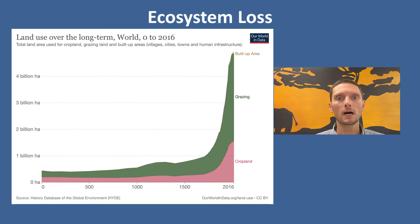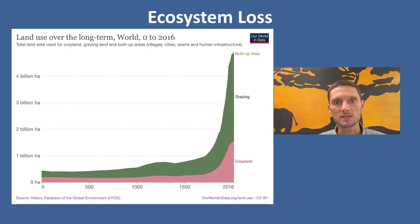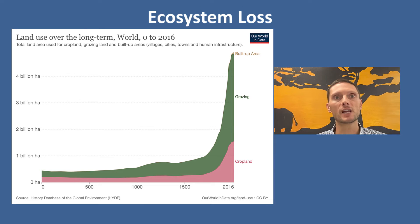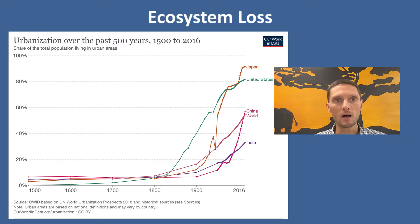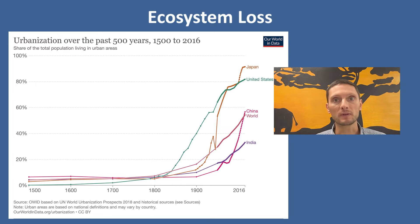Now we want to look specifically at how ecosystems are being lost, through direct or indirect causes. Starting with agricultural land expansion — since the 1970s, we've seen massive changes in the amount of land used for agricultural purposes, particularly affecting old-growth tropical forest ecosystems like those in the Amazon. A second example is urbanization: the expansion of urban areas has doubled since the early 1990s to support human population growth, and natural ecosystems have been cleared to support this.